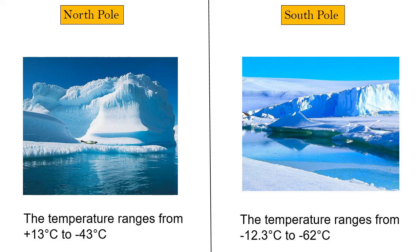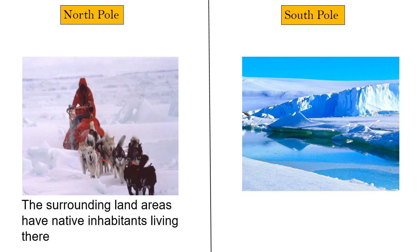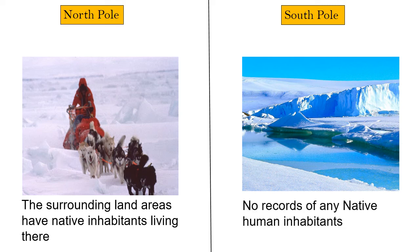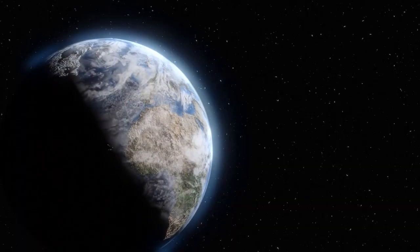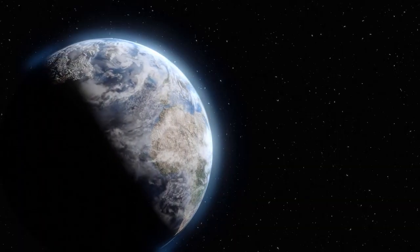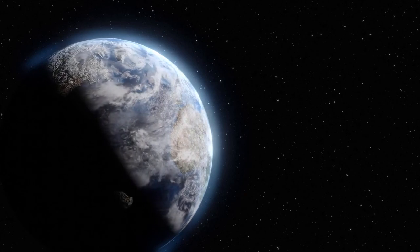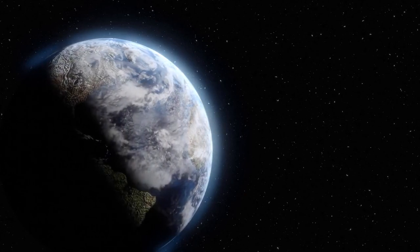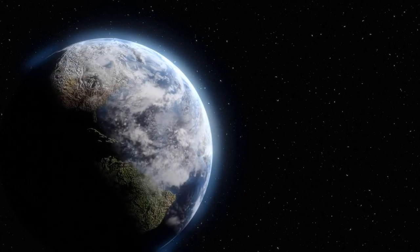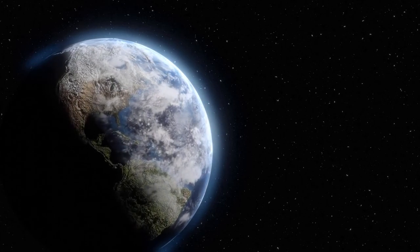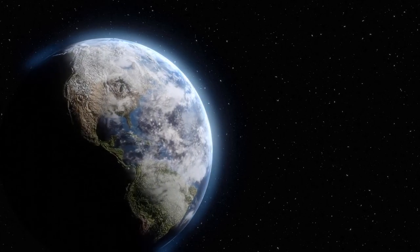The area surrounding the North Pole has native people residing there, while the South Pole has never had any native human inhabitants. Even though the North Pole and South Pole are polar opposites, they both get the same amount of sunlight, but the South Pole is a lot colder than the North Pole.